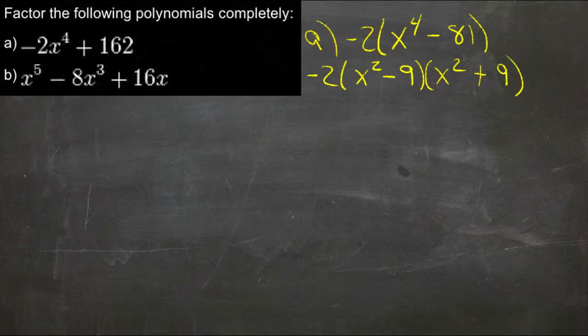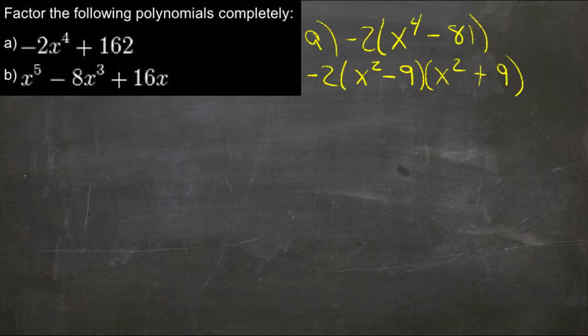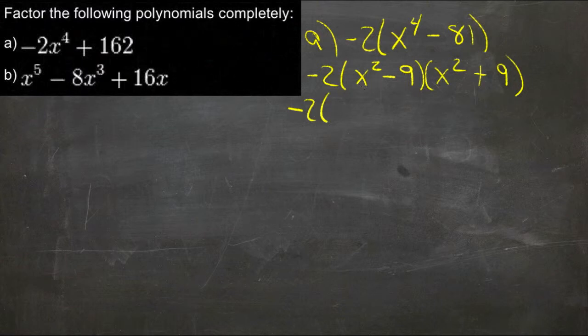Now, this isn't really factorable anymore, but this is another difference of squares. So we can pull that one apart, and we get negative 2 times the square root of x squared is x, the square root of 9 is 3,